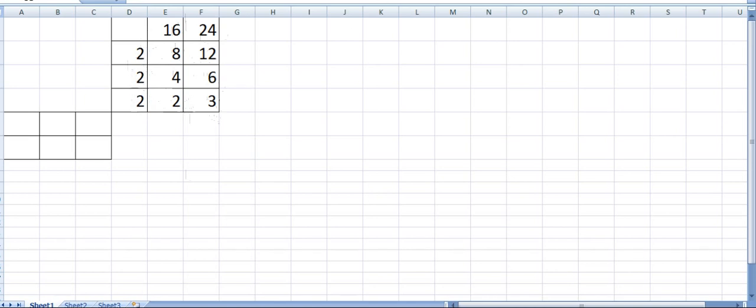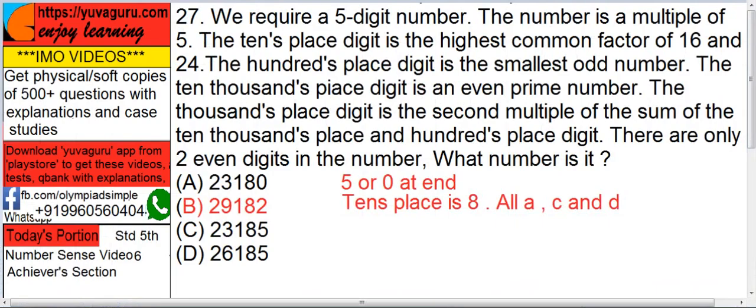In exam you should not be required to do all these steps. The table should be learned by heart up to 20. So 16, 24, 8 times 2 is 16, 8 times 3 is 24, so 8 is the only factor. That much faster it should be. So ten's place is 8. So 8 is common to all A, C and D. B is out now.